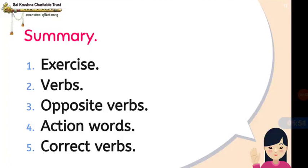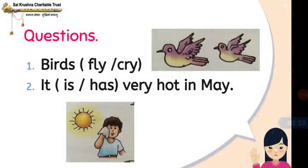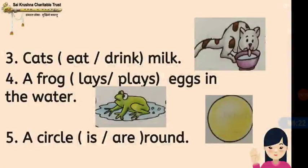Now the question section. Birds fly or cry — you can also guess by this picture. You have to draw the picture in your classwork and write all these questions. Second question: It is or has very hot in me. Cats eat or drink milk. A frog lays or plays eggs in the water. You have to write the correct answer. A circle is or are round — you have to think and answer it. Okay children, thank you.